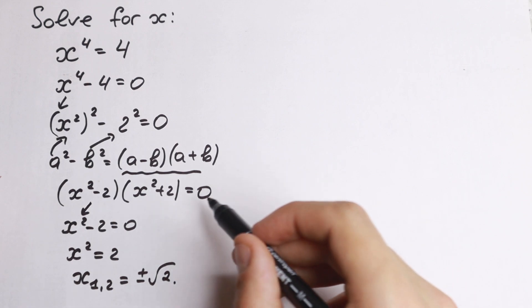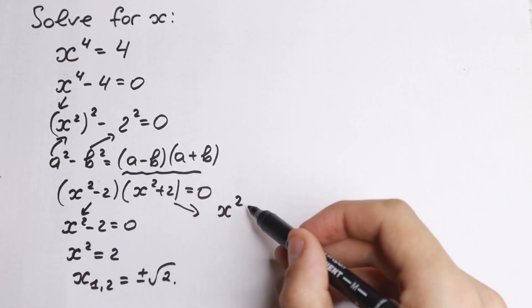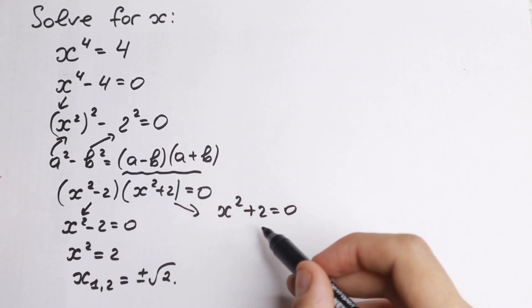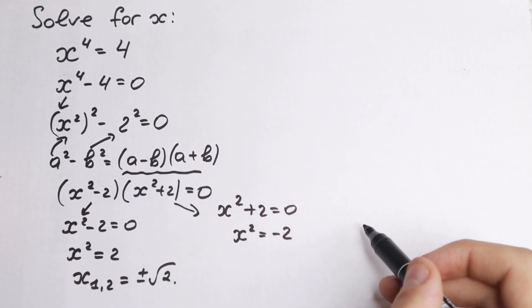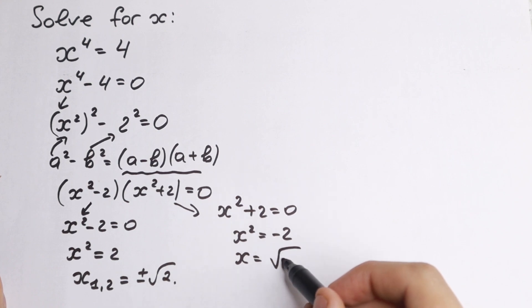But what about the next pair? We have x squared plus 2 equal to 0, and this pair is more interesting than that one. We have x squared plus 2 equal to 0, and from here x squared equal to minus 2. So as a result our x is square root of minus 2, of course with the plus minus sign.